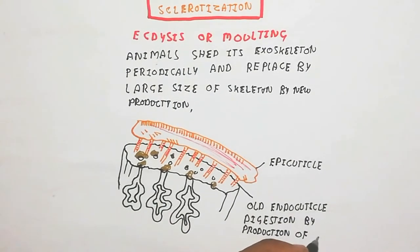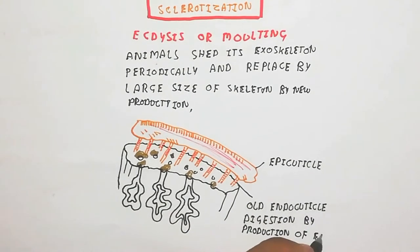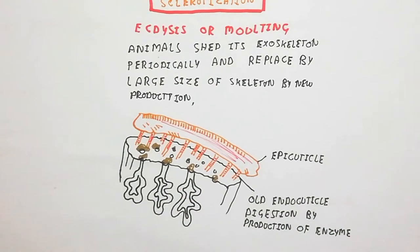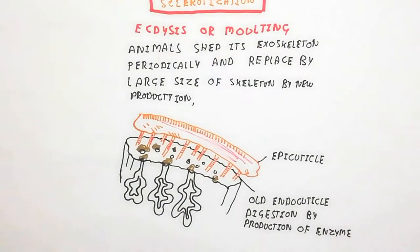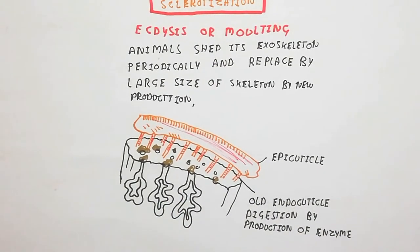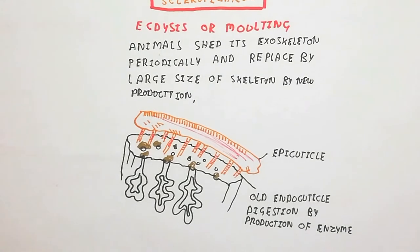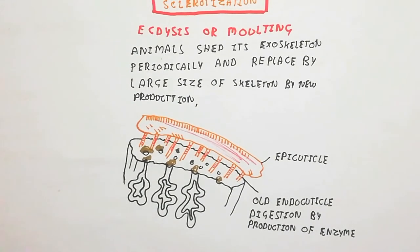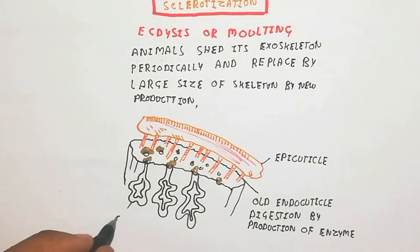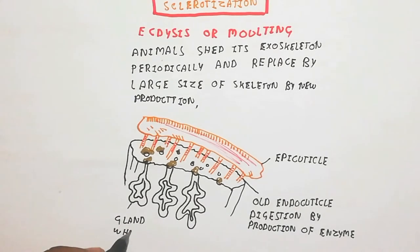The separation of the endocuticle and exoskeleton occurs during ecdysis. The endocuticle is separated by digestion due to the enzyme, causing the old endocuticle and exoskeleton to separate.